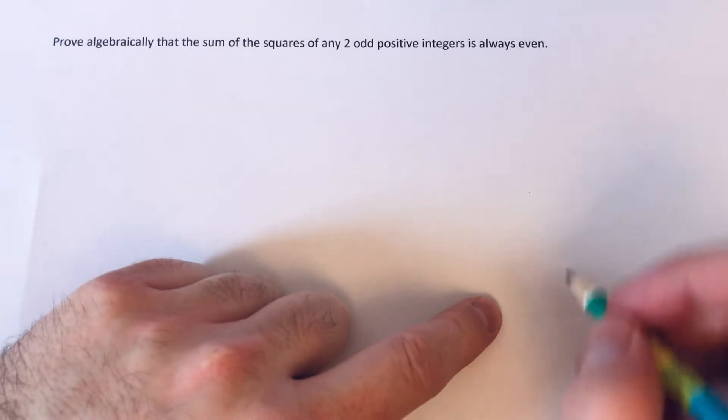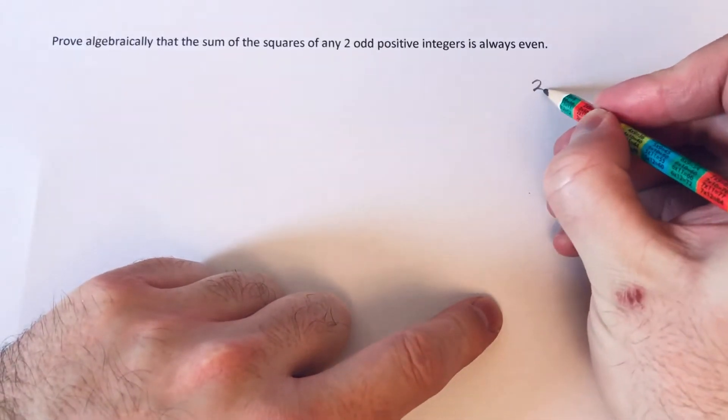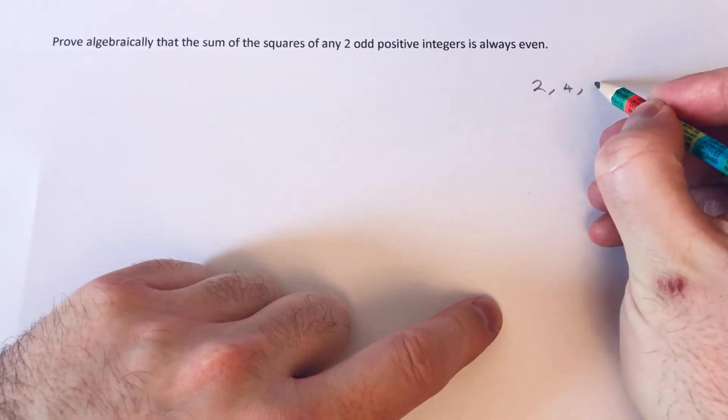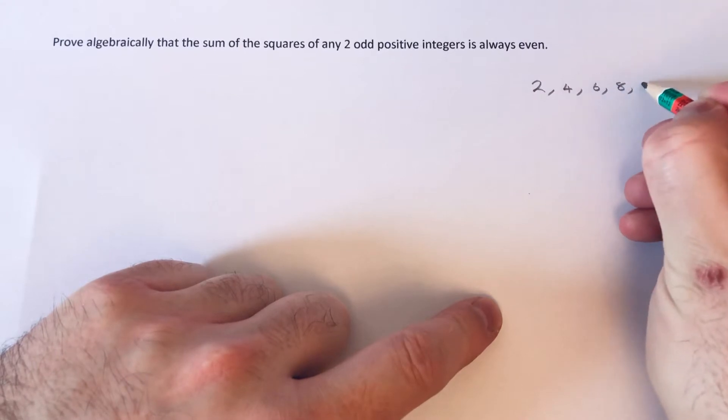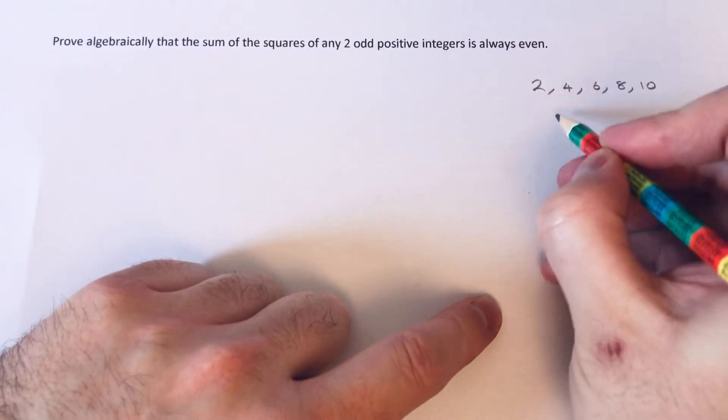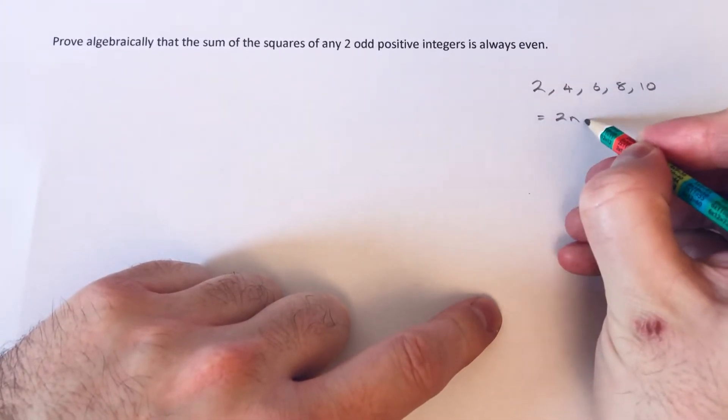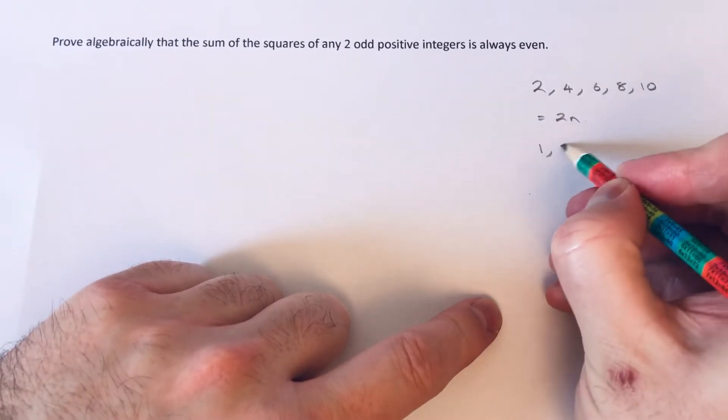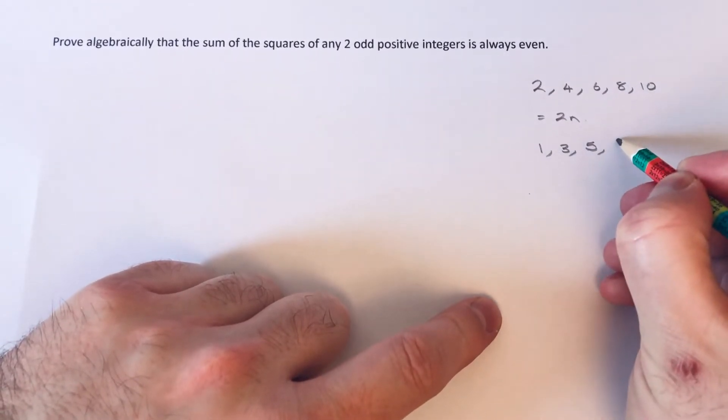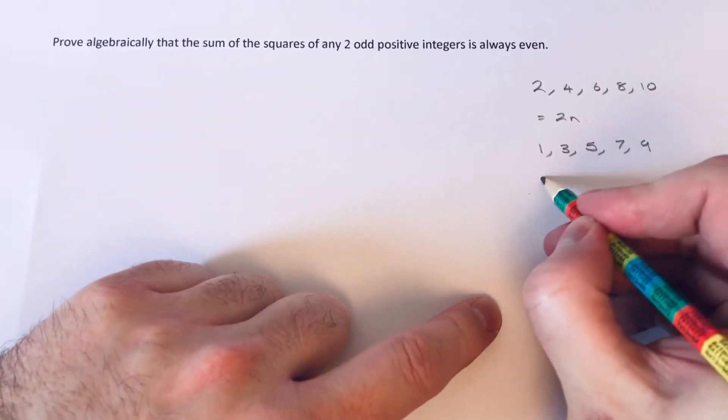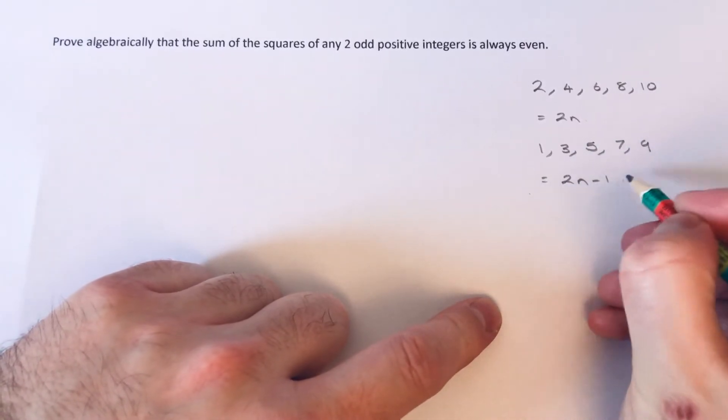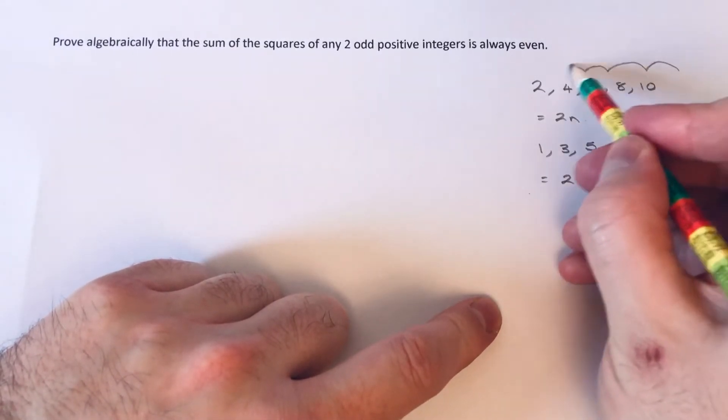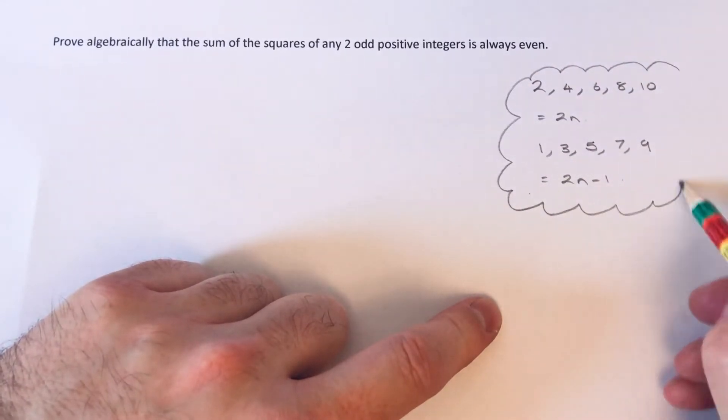Before you start off with these types of proofs, you need to know that the nth term for the even number sequence 2, 4, 6, 8, 10 is 2n. And the nth term for the odd number sequence 1, 3, 5, 7, 9 is 2n minus 1. So you'll find these useful when you do these types of proofs.